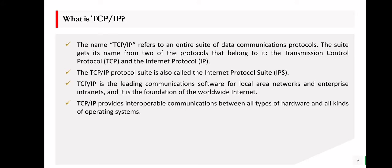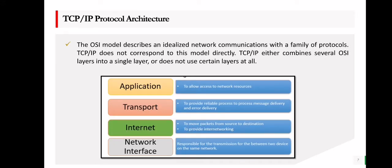Let us now discuss the TCP/IP protocol architecture. The OSI model describes an idealized network communication with a family of protocols. TCP/IP does not explicitly correlate to this model. TCP/IP either blends several OSI layers into a single layer or skips layers entirely. The TCP/IP protocol layers are shown in the table, and the different protocols available to each stage of the protocol stack. Let us discuss them one by one.